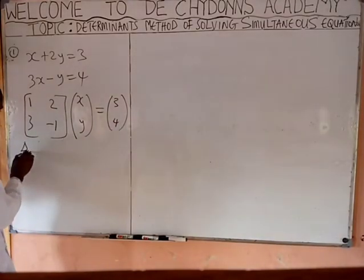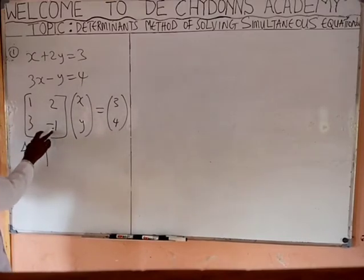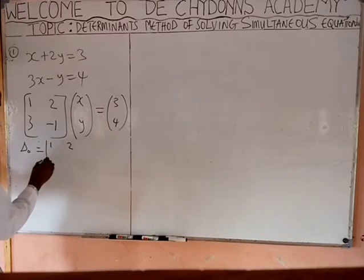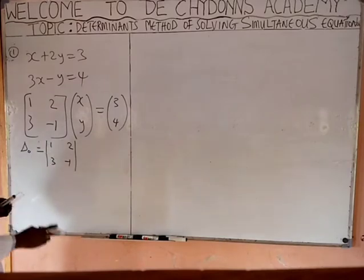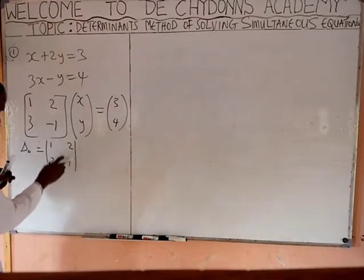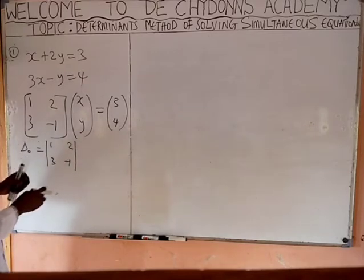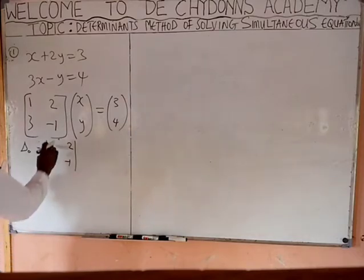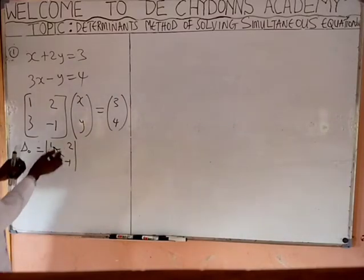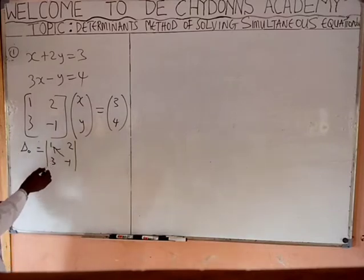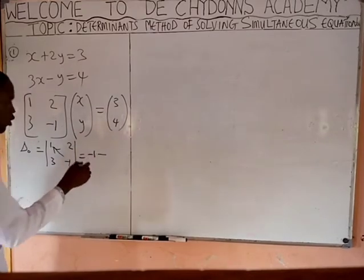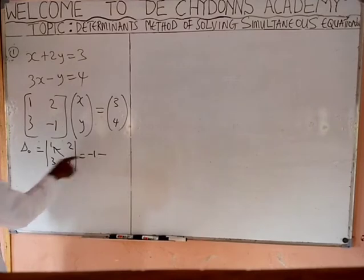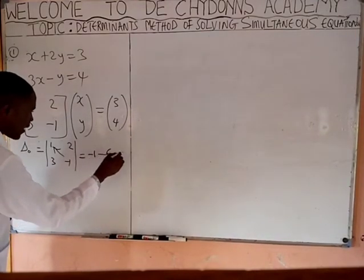What you write is Delta 0. Delta 0 means find the determinant of this box: 1, 2, 3, minus 1. Determinant simply means the difference between the product of the diagonal element and the off-diagonal element. This is called the diagonal element, while the other one is called the off-diagonal element. So we say 1 times minus 1 = minus 1, minus 3 times 2 = 6, giving you minus 7.